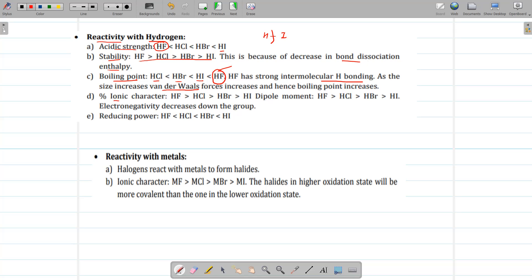Then next is the percentage ionic character. Percentage ionic character decreases as we move down the group. Then dipole moment. Dipole moment decreases down the group again due to decrease in electronegativity.